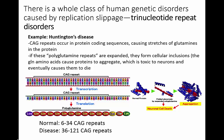Huntington's disease is a dominantly inherited disorder of neurodegeneration. Neurons degenerate because large protein aggregates accumulate in the cells, eventually leading to cell death. These proteins aggregate because they have extra-long stretches of glutamine amino acids. These extra-long glutamine stretches are caused by expansion of the codon CAG. Normally in the Huntington gene, people have between 6 and 34 CAG repeats, but in the disease state, this region is expanded to 36 or higher, causing misfolded protein aggregates and neuronal cell death.